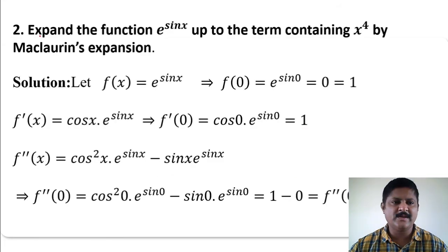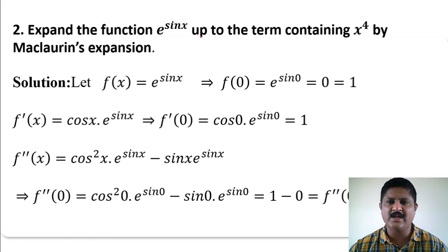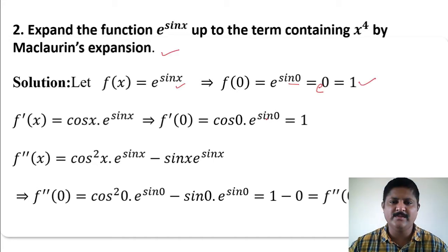The second problem is: expand the function e to the power sin x up to the term containing x to the power 4 by Maclaurin's expansion. Let f(x) equals e to the power sin x, which implies f(0) equals e to the power sin 0, which is e to the power 0, equals 1. Differentiate this function: f'(x) is the differentiation of e to the power sin x, which is e to the power sin x into cos x. Therefore f'(0) equals cos 0 into e to the power sin 0, which equals 1 into 1, equals 1.